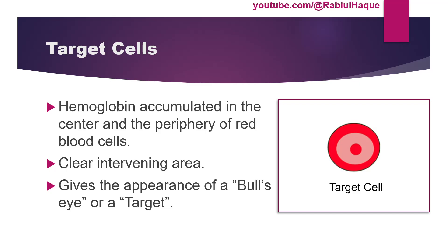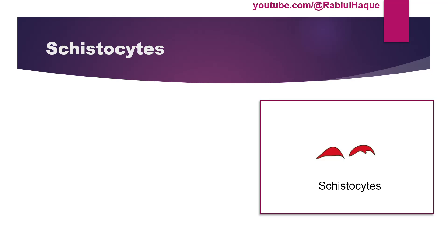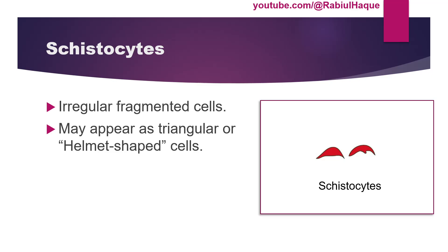Another morphology is known as schistocytes. These are irregularly fragmented cells that may appear triangular or, in some textbooks, are referred to as helmet-shaped cells. Always remember schistocytes are fragmented red blood cells and they may indicate hemolytic anemia.